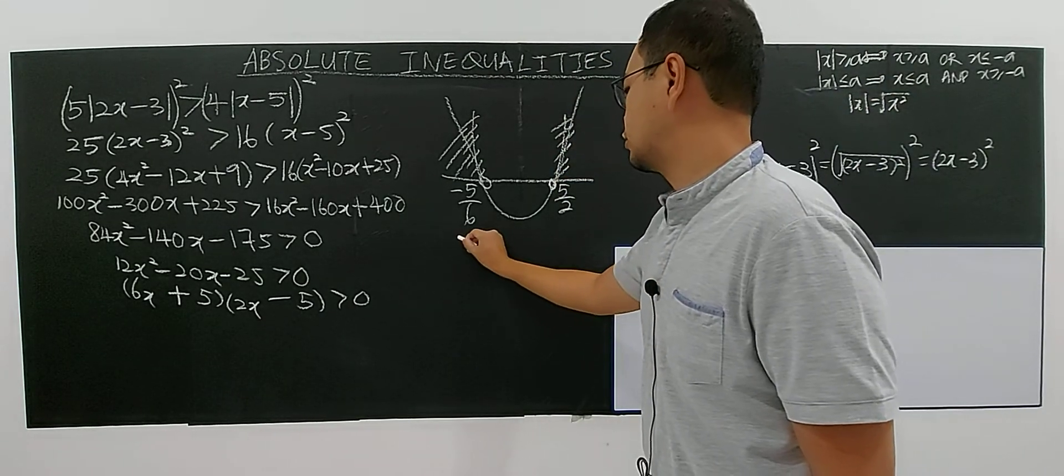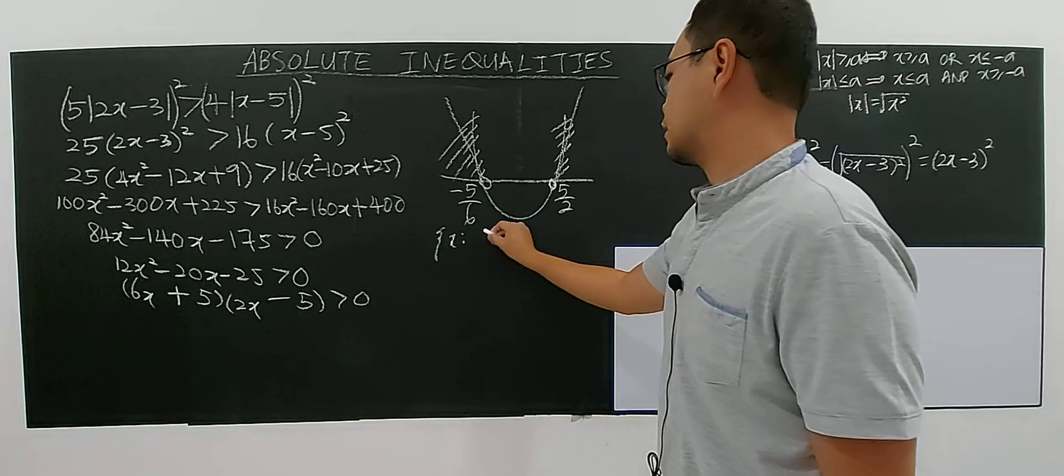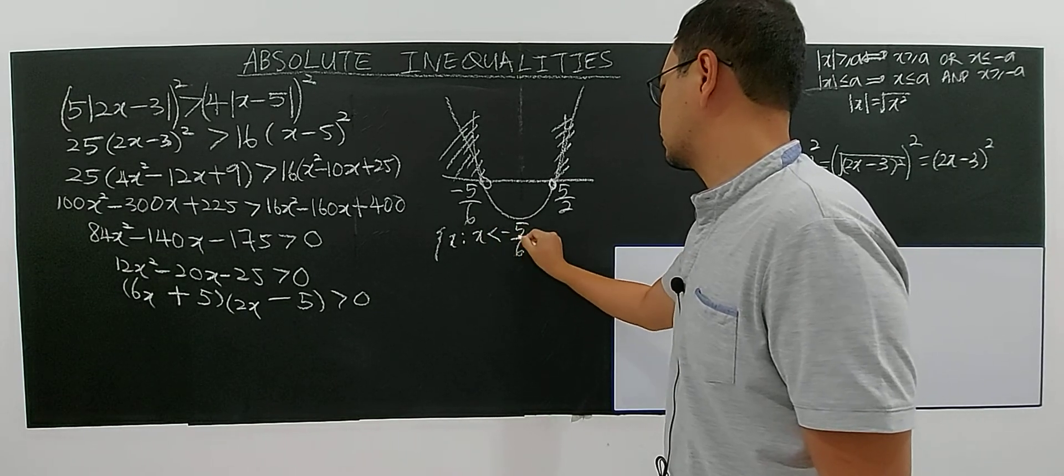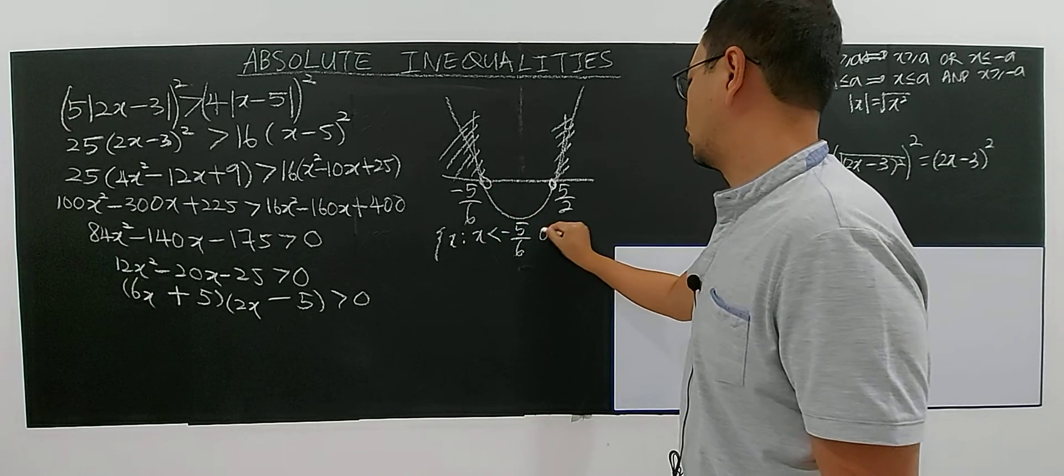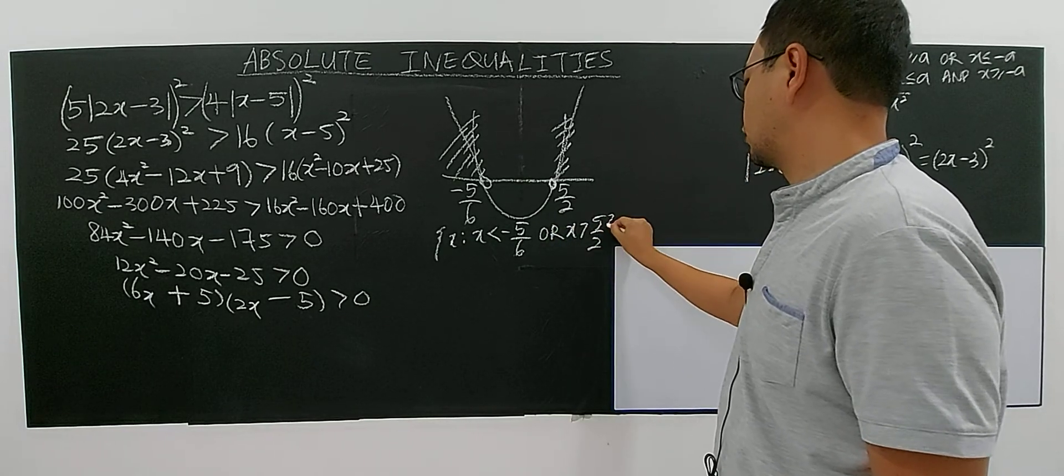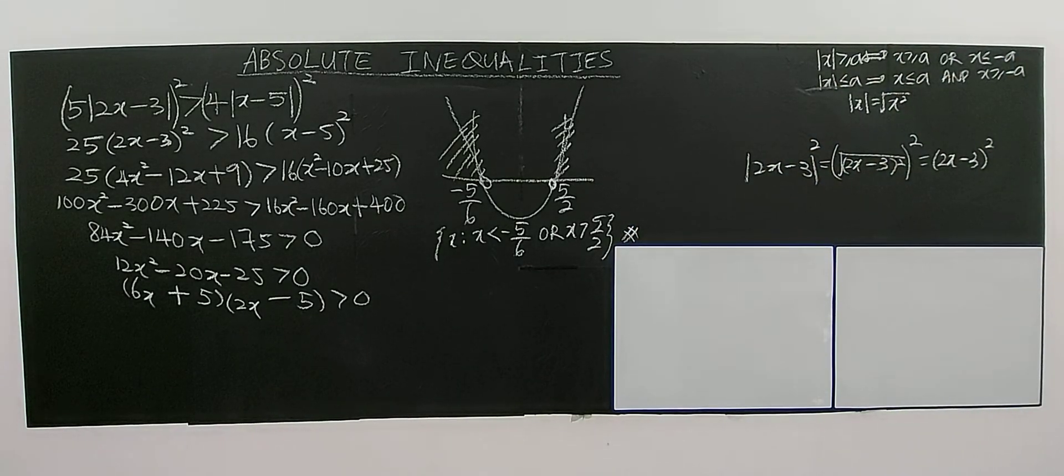Then your solution for x will be: x less than negative 5 over 6, or x greater than 5 over 2. So this is the solution for this absolute inequality.